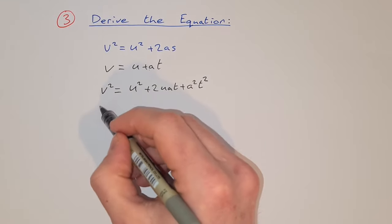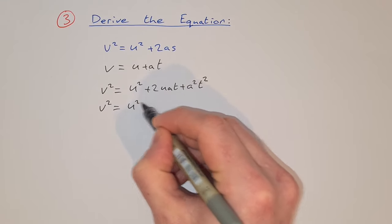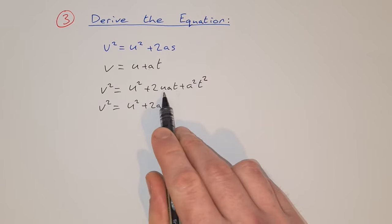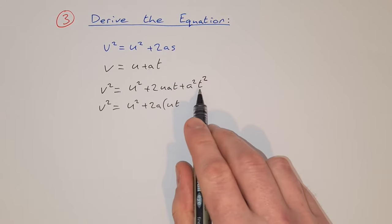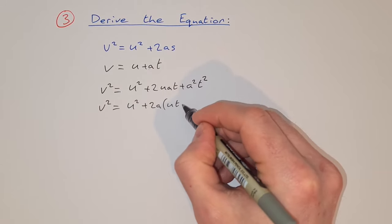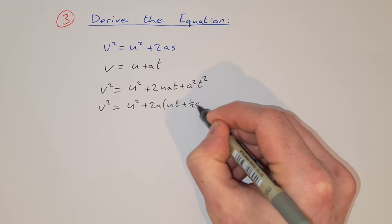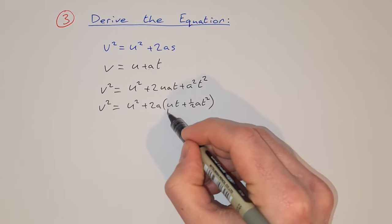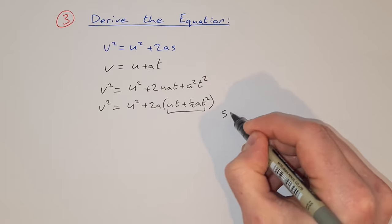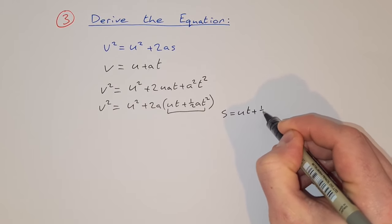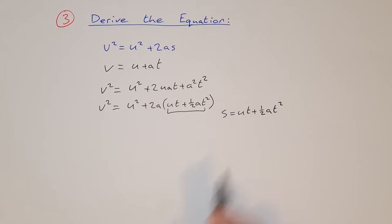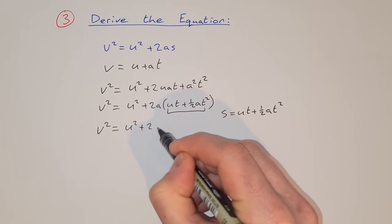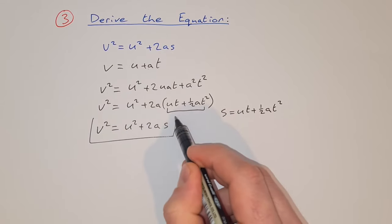On the right hand side, we factor out 2a from the last two terms, and that leaves us with ut + ½at². Now we know that ut + ½at² equals s, from our second equation. So we can substitute that in, giving v² = u² + 2as, which is what we were asked to derive.